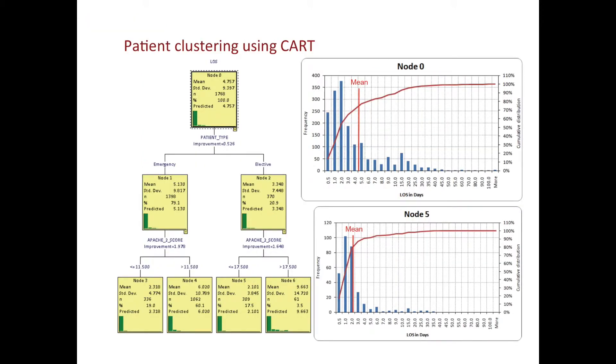Here is an example of critical care data using classification and regression trees, CART, where we are trying to predict length of stay in the critical care unit. Node 0 contains all the data, 1768 observations, with an average length of stay of 4.8 days, and the corresponding distribution is shown here. CART uses a binary splitting technique to try and reduce overall variance. More generally, CART is one of the decision tree family of tools.